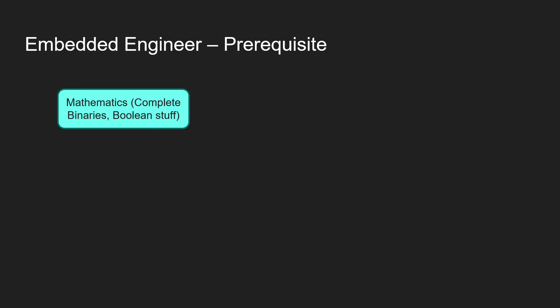The first one is fundamental mathematics — the binaries, the boolean stuff. When you go with digital electronics, conversion from binary to octal, octal to binary, those kinds of questions are still asked in interviews. And that helps you as well when you code at times with embedded systems. So make sure that you know the boolean, the conversion stuff, the binary stuff — all those are very fundamental and important.